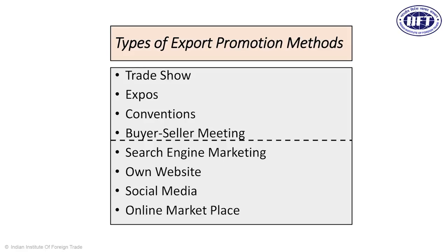On the screen you can see there are eight major types of export promotion methods: trade shows, expos, conventions, buyer-seller meetings, search engine marketing, owning your website, using social media, and participating in various online marketplaces. These can be grouped into two broad headings — direct meetings and indirect methods. The first four — trade shows, expos, conventions, buyer-seller meetings, conferences, seminars — come under direct meetings, where you get to interact with the buyer face to face and discuss opportunities.